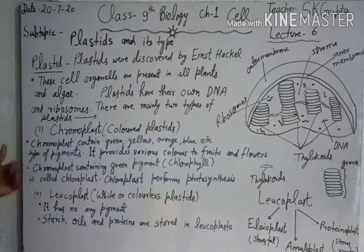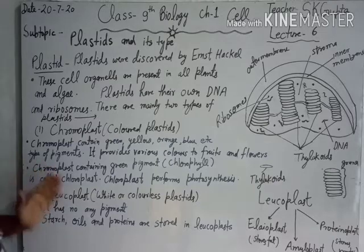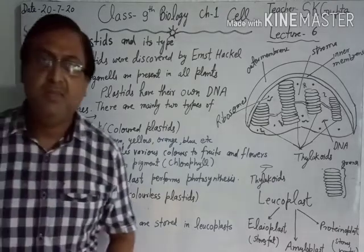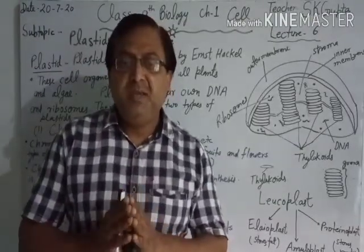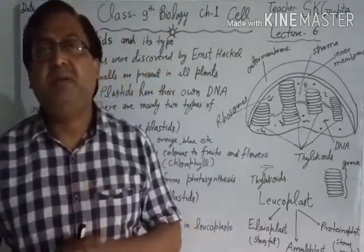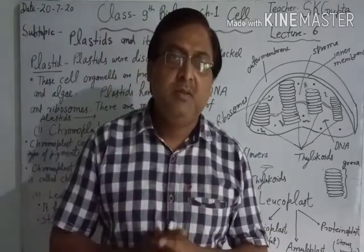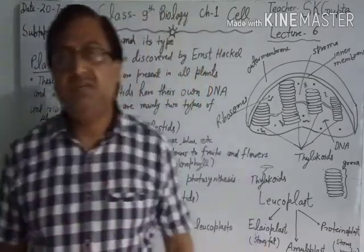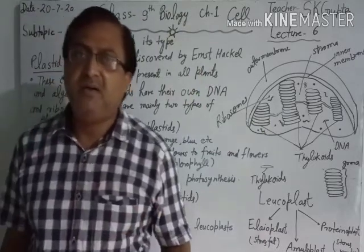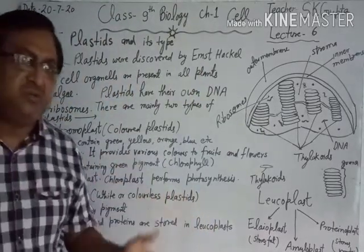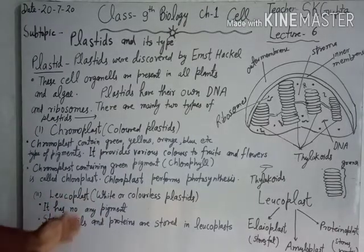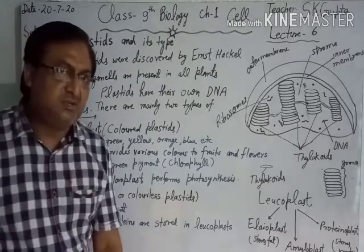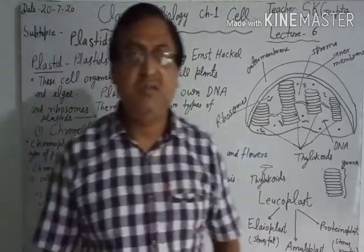After chromoplasts, we will now discuss leucoplasts. Leucoplasts are also called white or colorless plastids because they have no color and contain no pigment. The main function of leucoplasts is the storage of many important and useful substances like starch, oil, and proteins.